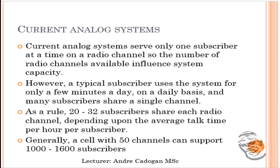Analog systems typically have between 20 to 30 subscribers for each radio channel, depending on average talk time. So if you have 50 channels in a specific urban or rural area, it will accommodate between 1,000 to 1,600 subscribers — that is 50 multiplied by 20 or 50 multiplied by 32 — in terms of the system capacity. 1G technology is what some people refer to as the old TDMA system.